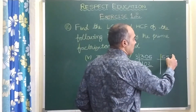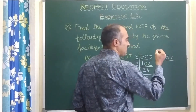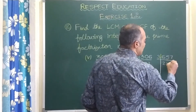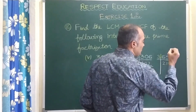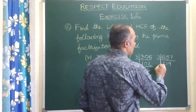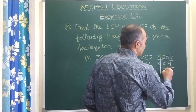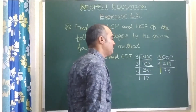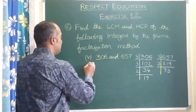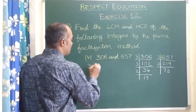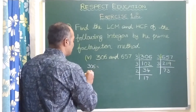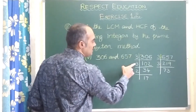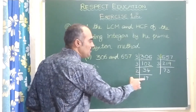For 657: digit sum 6+5+7=18, so we can try with 3. Dividing gives 219. Again with 3 to get 73. 73 is again a prime number, so we can leave it. Now let us write the prime factorization: 306 means 3 into 3, that is 3 square, into 2, into 17.